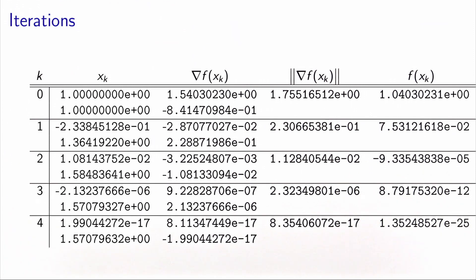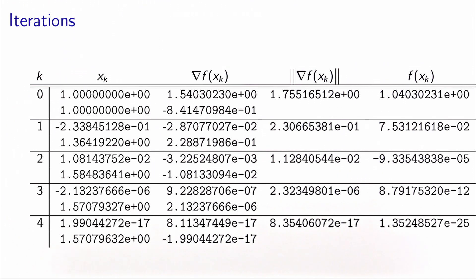So in this case, Newton's method is converging towards a stationary point, that is a point that makes the gradient zero, and does it very fast. Good. Well, let's analyze this solution.